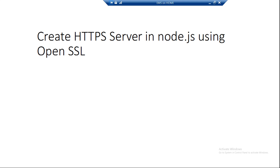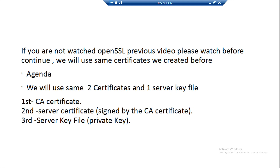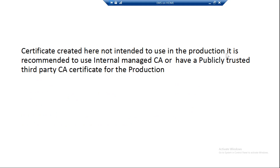Good morning, welcome to Network 360 channel. In this video we are configuring an HTTPS server in Node.js using OpenSSL. In the first part of this video we already created the certificates. If you didn't watch it, please go and watch the first part. Note: the certificate created here is not intended for production use. It is recommended to use an internal managed CA or a publicly trusted third-party CA certificate for production. This is for a test lab or internal purpose only.